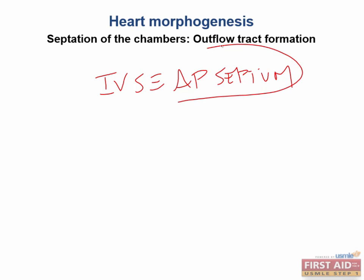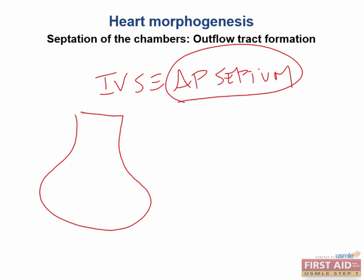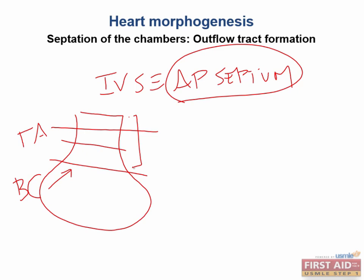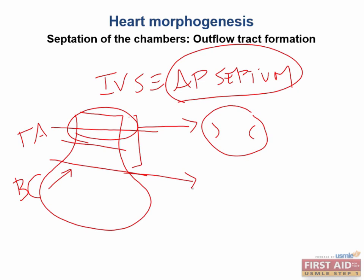Now where did this aorticopulmonary septum come from? Here is our forming heart tube, and if we cut through the cross sections of this truncus up here, and also of the bulbus cordis here, we can see that the descending aorticopulmonary septum will be formed by areas of endocardial tissue. In the truncal area, if we look at the cross section, there will be little bulges of tissue. Also in the bulbus cordis region, there are little segments of tissue bulging out into the canal. These will continue to grow into septations.